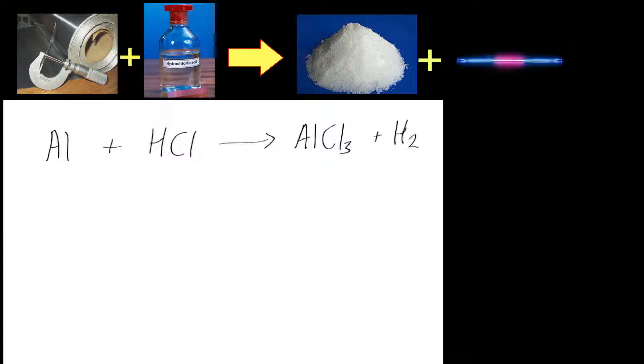Hi, in this example we're going to have a look at the reaction of HCl and aluminum. You've probably done this in school, where you take aluminum and you add acid to it, in this case hydrochloric acid, and it gives off hydrogen gas.